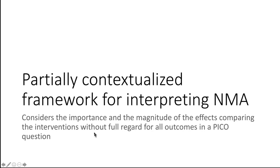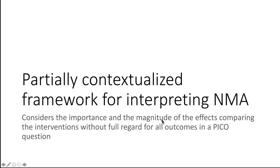The partially contextualized framework for interpreting network meta-analysis considers the importance and the magnitude of the effects that compare the interventions, without however a full regard of all outcomes that have been part of the PICO. It's a per-outcome based approach that will help bring both the benefits and the harms together. When I say importance, I mean the relative importance placed on the outcomes we are considering, and magnitude refers to the actual estimates of the effect in absolute terms.